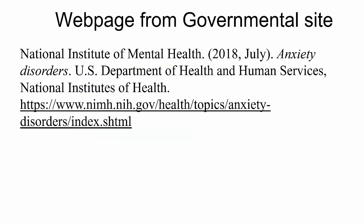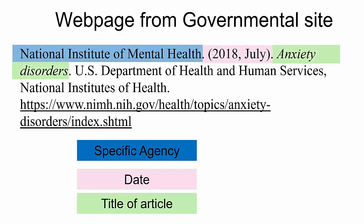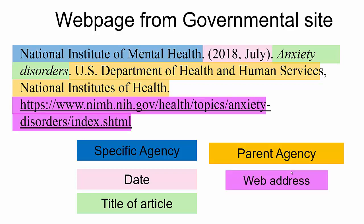Next, let's take a look at a web page from a governmental website. If there is no author, use the specific agency that the web page belongs to as the author. Next is the date in the same format as the others, followed by the title of the article in the same format. Next is the parent agency — in this example, a large department, the United States Department of Health and Human Services, with an agency, the National Institutes of Health, within it. Last is the URL as a live link with no period.